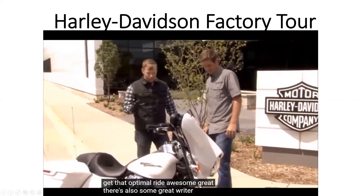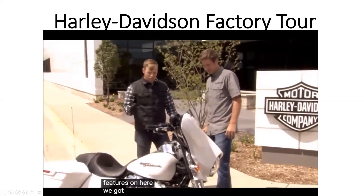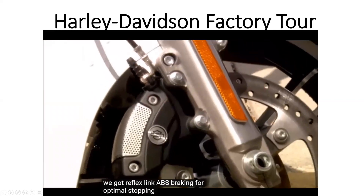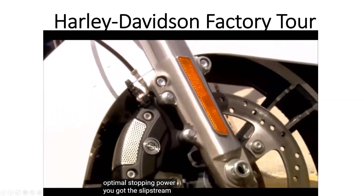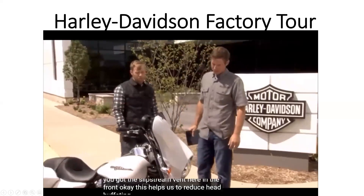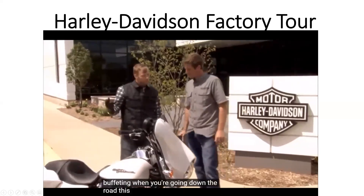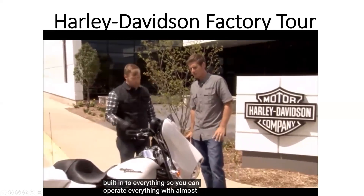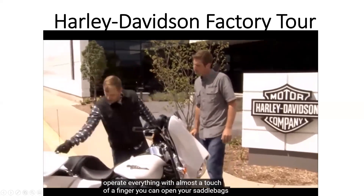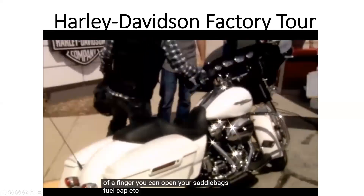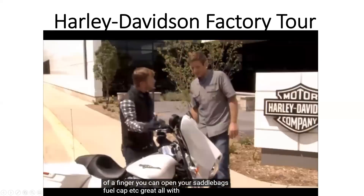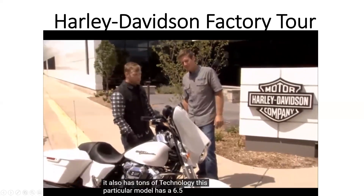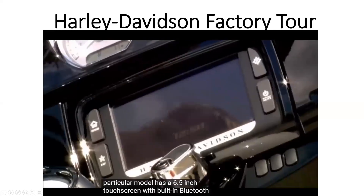There are also some great rider-centric features on here. We've got reflex link ABS braking for optimal stopping power. We've got the slipstream vent in the front, which helps reduce head buffeting when you're going down the road. This bike also has one-touch design built into everything, so you can operate almost everything with the touch of a finger — you can open your saddle bag, fuel cap, and more. It also has tons of technology: this particular model has a 6.5-inch touchscreen with built-in Bluetooth and GPS.